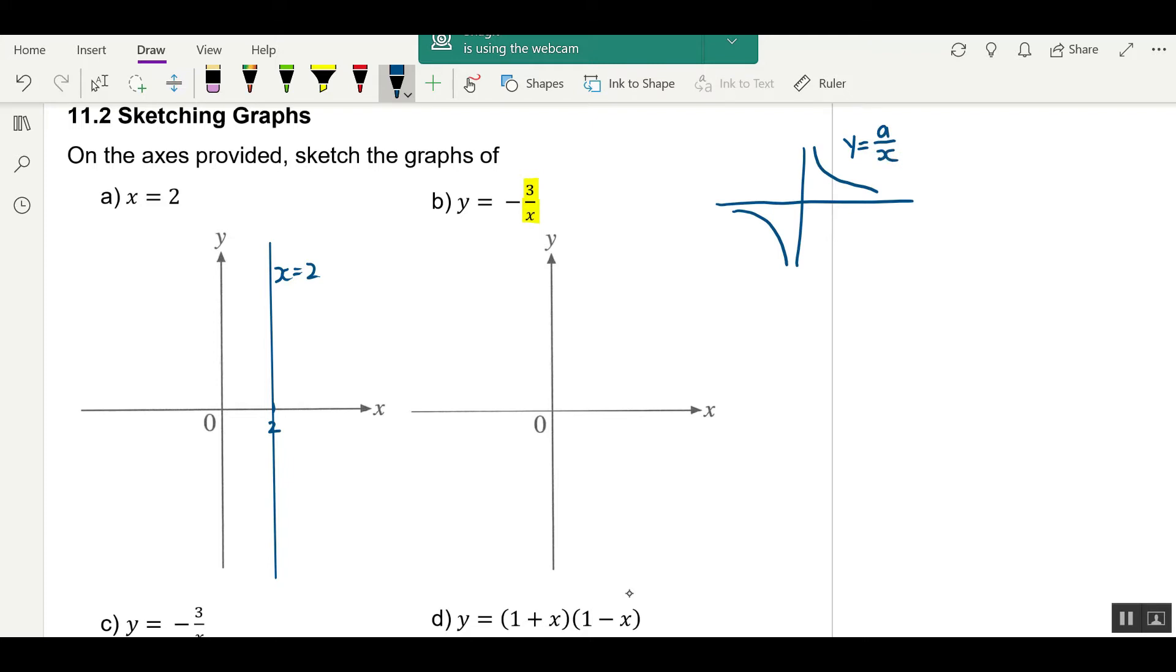But if you have a negative in front, what happens? Flip from the positive y to the negative y. So it will look like this and this. Make sure you start very close to the axis. And when you go down, make sure you end also very close to the axis. It must be very close, and it must go towards the axis. You cannot turn it up like that. It must go very, very close to the axis.